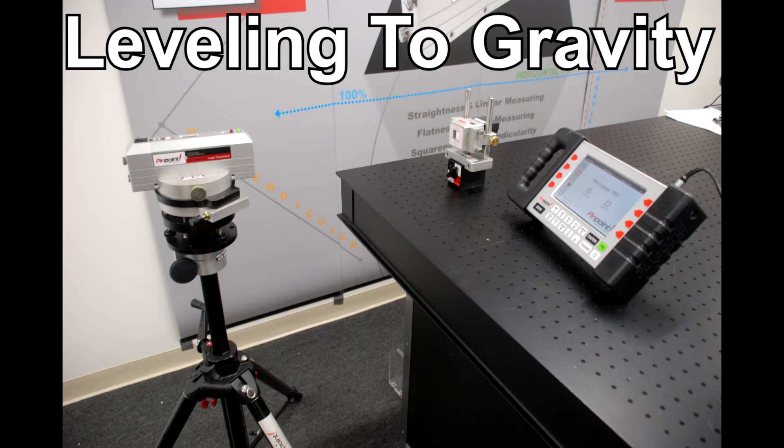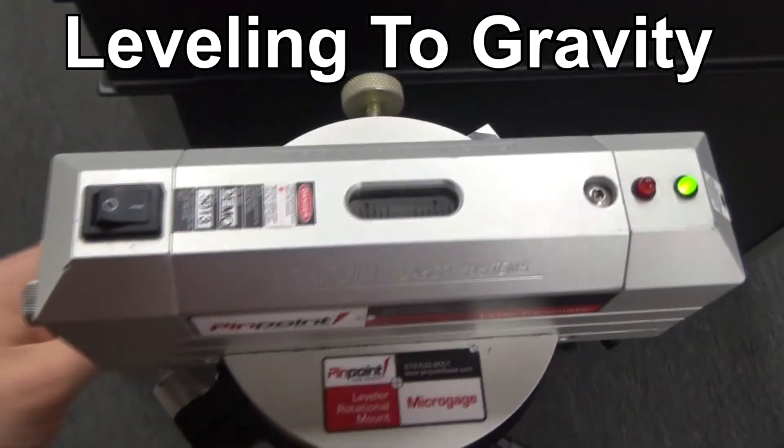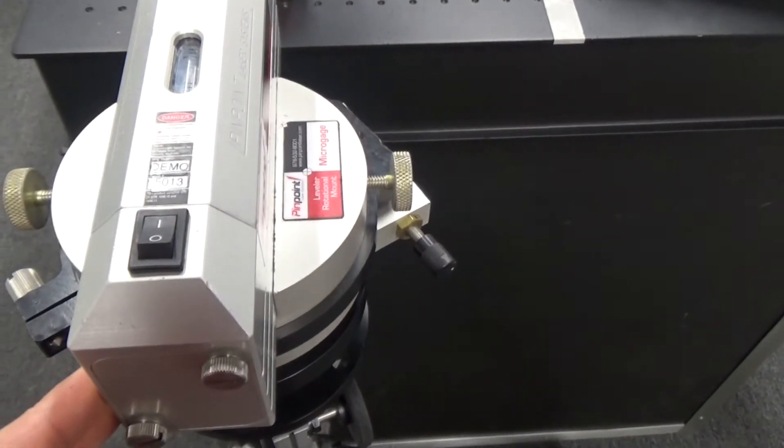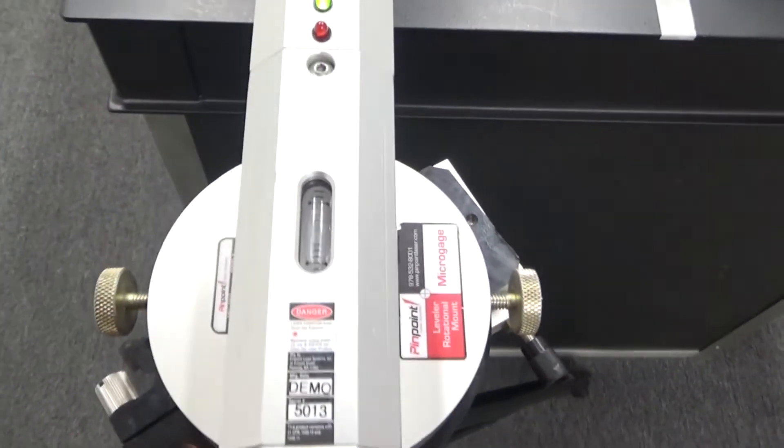Now let's go over some common ways to measure flatness using a table as an example. The first method is leveling to gravity. To start, the laser is placed on the rotation mount and clocked symmetrically to the pitch knobs underneath. Observe the bubble level and adjust the pitch knobs until the bubble is level, then turn 90 degrees and repeat.